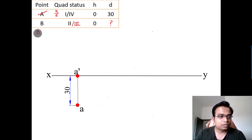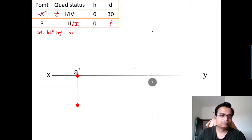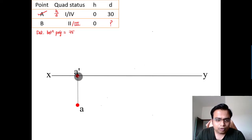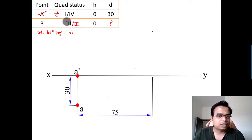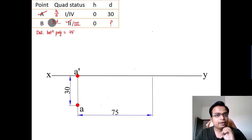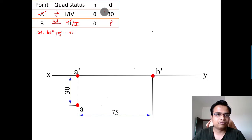The distance between the projectors of A and B was given as 75mm, so from point A's projector we mark another projector 75mm away. Since point B is assumed to be in the second quadrant, both the front view and top view will be above the XY line. Since H is zero, B dash will be right on the XY line, and we travel upwards — the distance is unknown and needs to be worked out.